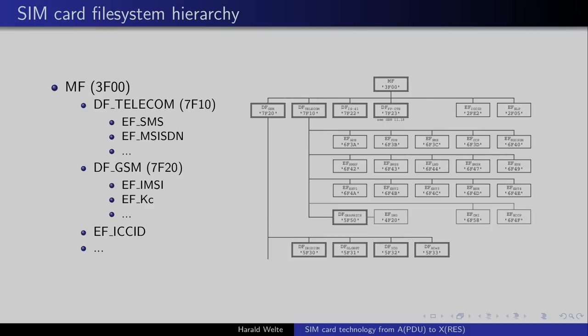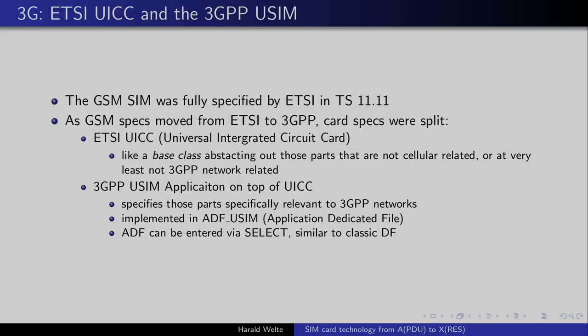Now looking at the file system hierarchy: we have the MF — the root — and then DF Telecom and DF GSM (the GSM directory containing GSM-related parameters). There's EF ICCID, the card unique identifier stored on the card. Expanding into more details you see there's also an Iridium directory, a GlobalStar directory — all kinds of operators of different telephony systems basically have their own directories in that scheme. But on GSM we mainly find those two with maybe some subdirectories.